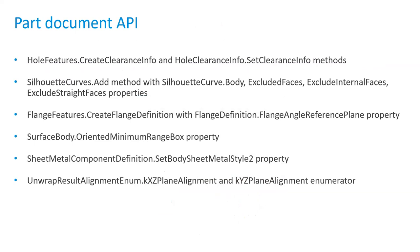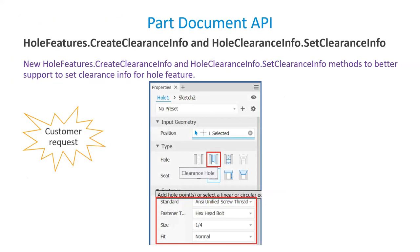Next we move on to the Part Document API. Here is the list of APIs considered for implementation under Part Document API. One customer request was to implement methods to create clearance info and also to set the clearance info for a hole feature.